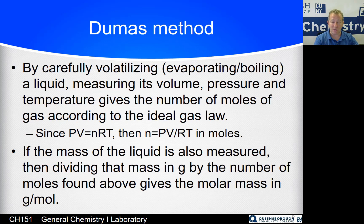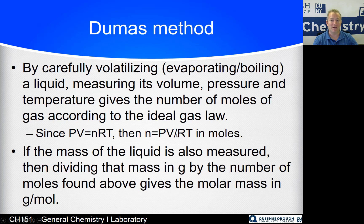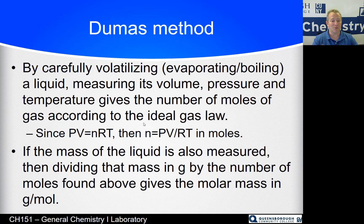This lab involves gas laws. The pressure of a gas times the volume of that gas equals the number of moles of that gas times R, which is the gas constant, times the temperature of that gas in Kelvin. This always works — it's a law. So we can rearrange that equation: number of moles equals PV over RT. If we measure P, V, and T of the gas, and R is a constant, we will have determined the number of moles of gas. If we can determine the mass of that sample — which is challenging for a gas — we're going to have a liquid that we will volatilize to a gas and then condense back down to a liquid. If we can weigh that liquid, we have figured out our number of grams and our number of moles independently and can calculate grams per mole.